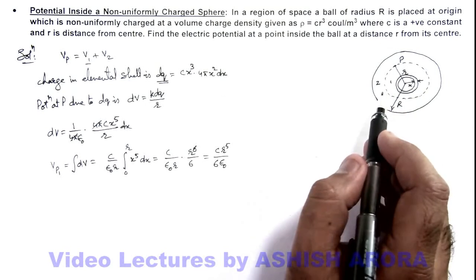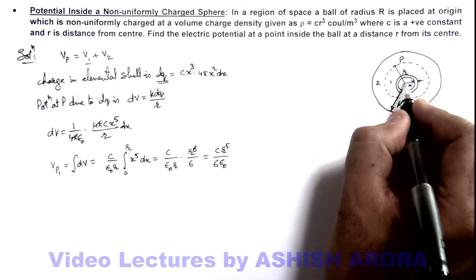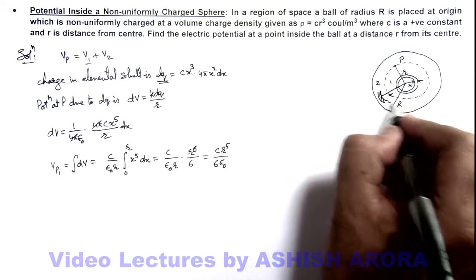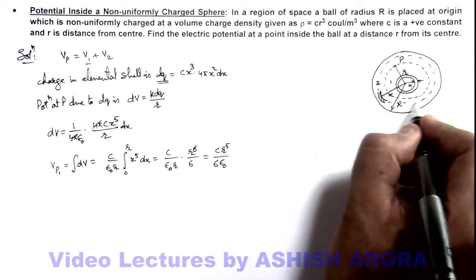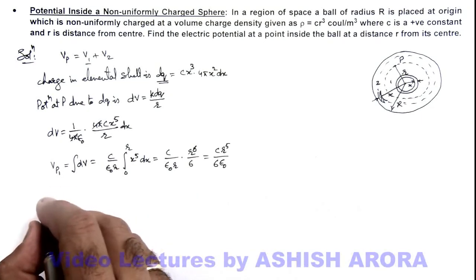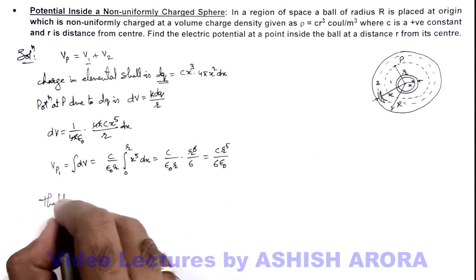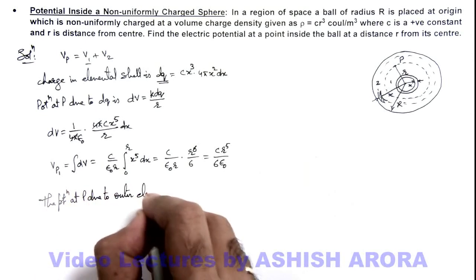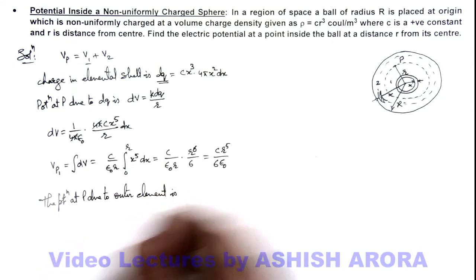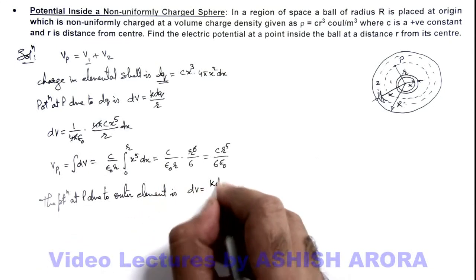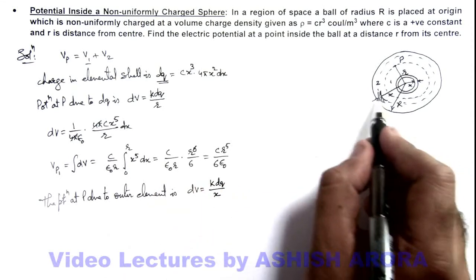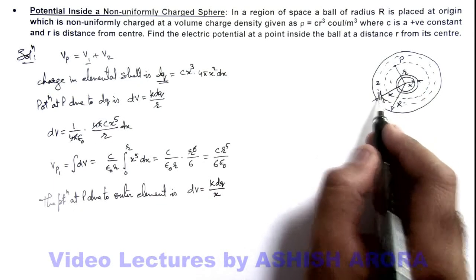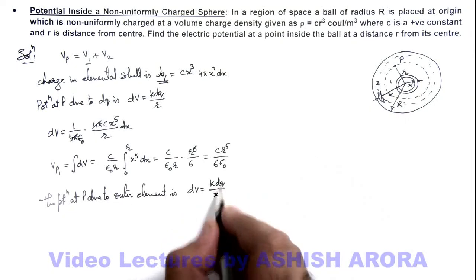Now to calculate the potential due to the outer region, we consider at a distance x outside the inner sphere a complete spherical shell of width dx. The potential at P due to this outer element is dV = k·dq/x, because for an outer spherical shell, at every interior point the potential remains the same as on the outer surface of the shell. That is why we use dV = k·dq/x.